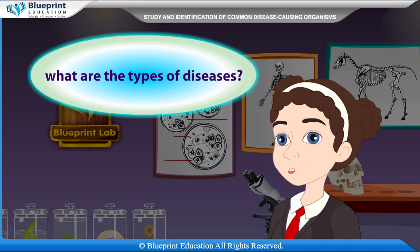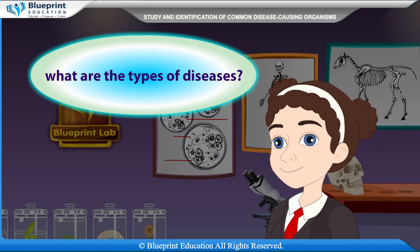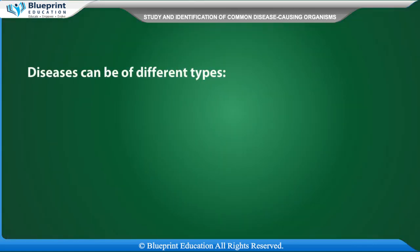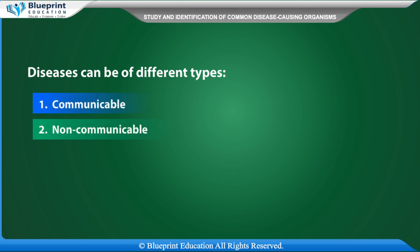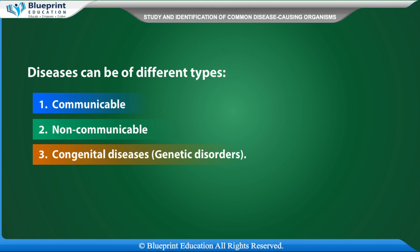What are the types of diseases? Diseases can be of different types: Communicable, Non-communicable, Congenital diseases, and Genetic disorders.